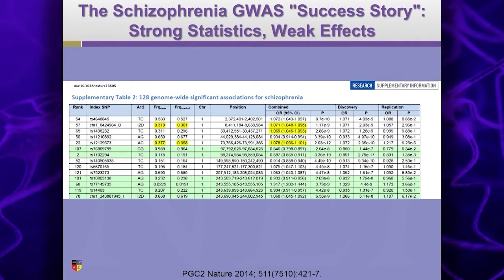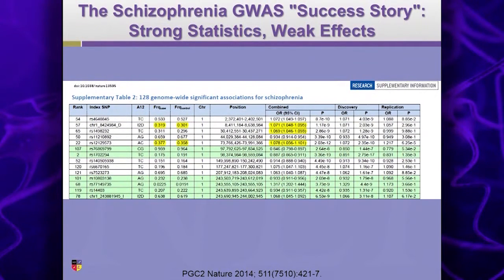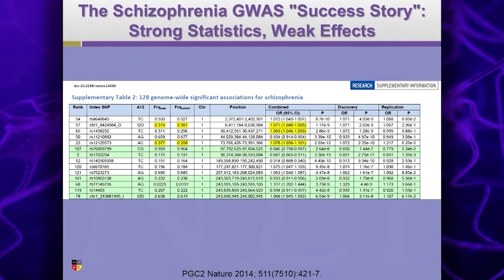If we look next to that P value, we have a thing called OR, which is the odds ratio — that means what is the increase in odds of you having schizophrenia if you inherit the variant that's associated with schizophrenia. So in the general population, if you assume your odds are one out of a hundred, your odds go up to 1.07 out of a hundred.